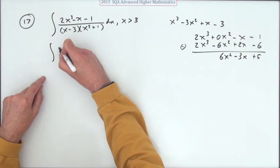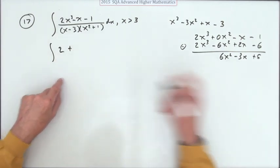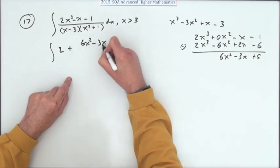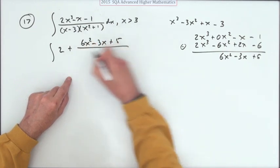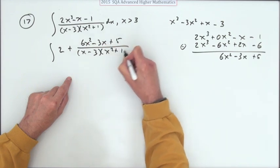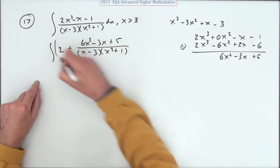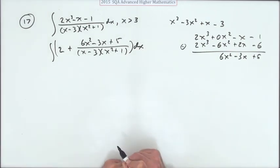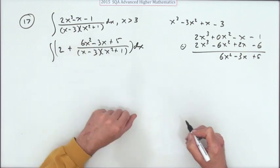What that says is that's equivalent to the integral of 2, because it went in twice, with that left over: 6x² minus 3x plus 5 over the same thing. But I'd rather have it factorized now because I'm going to use partial fractions. It's a wee bitty better, but now I'll have to use partial fractions to sort that out.